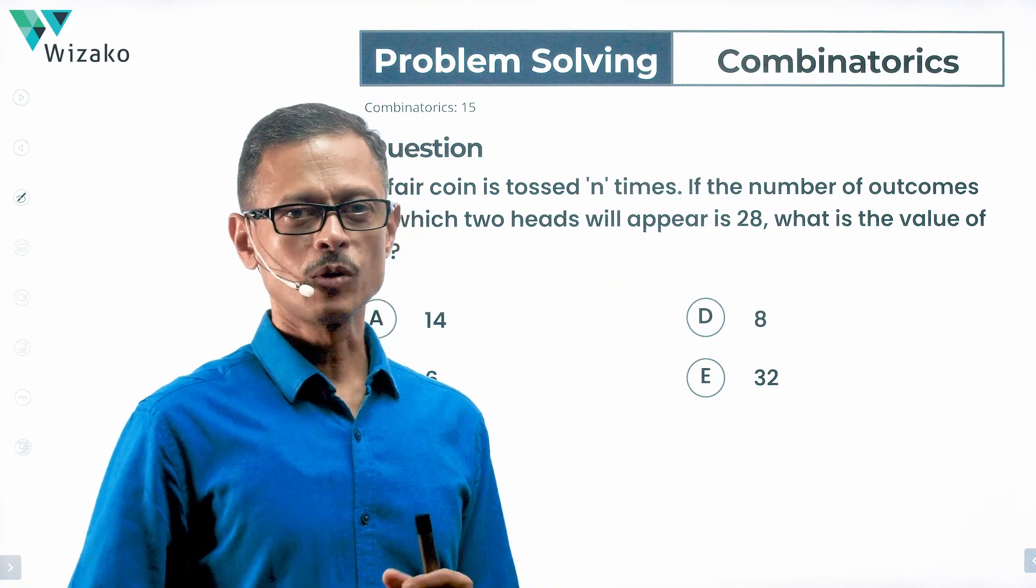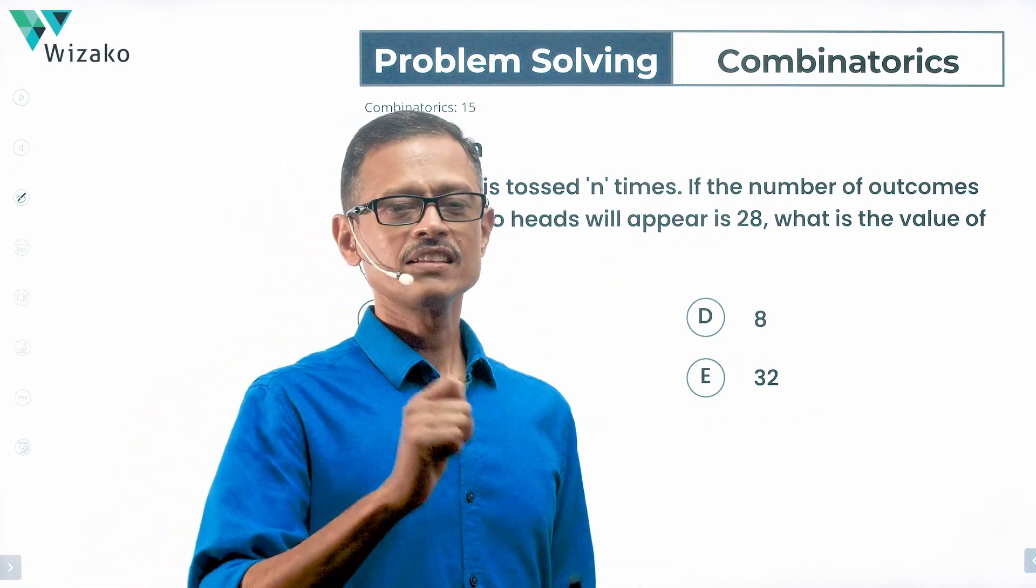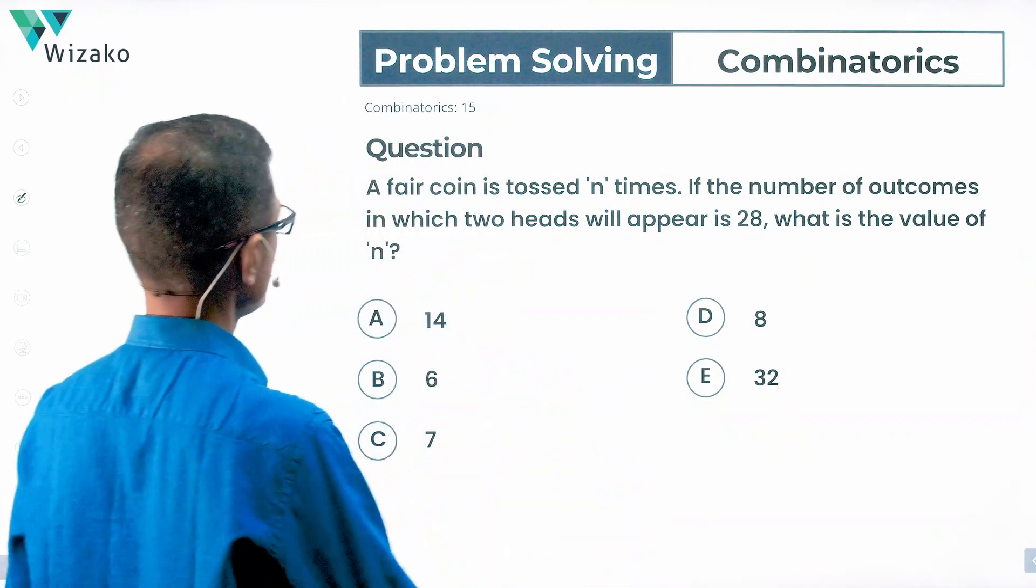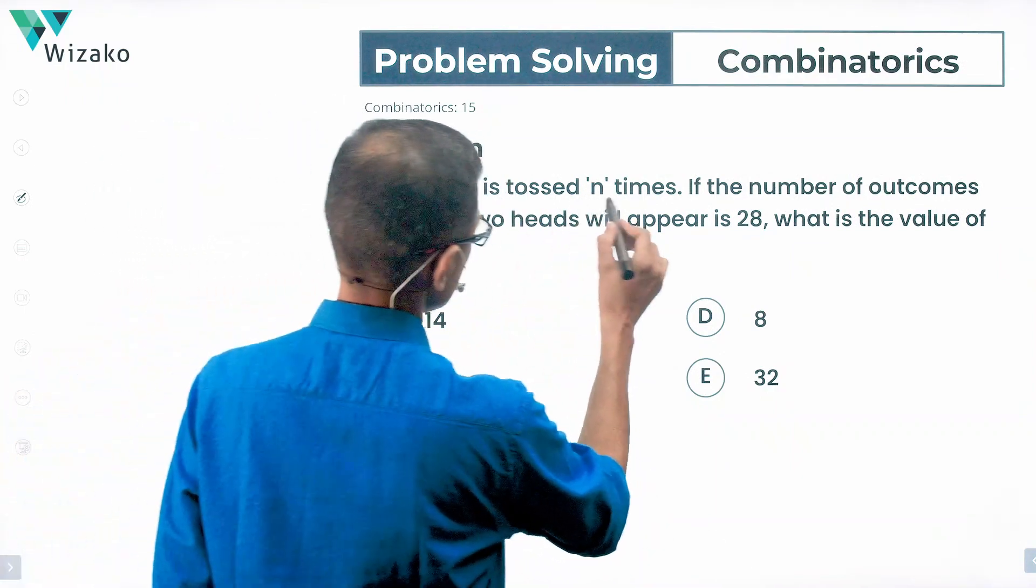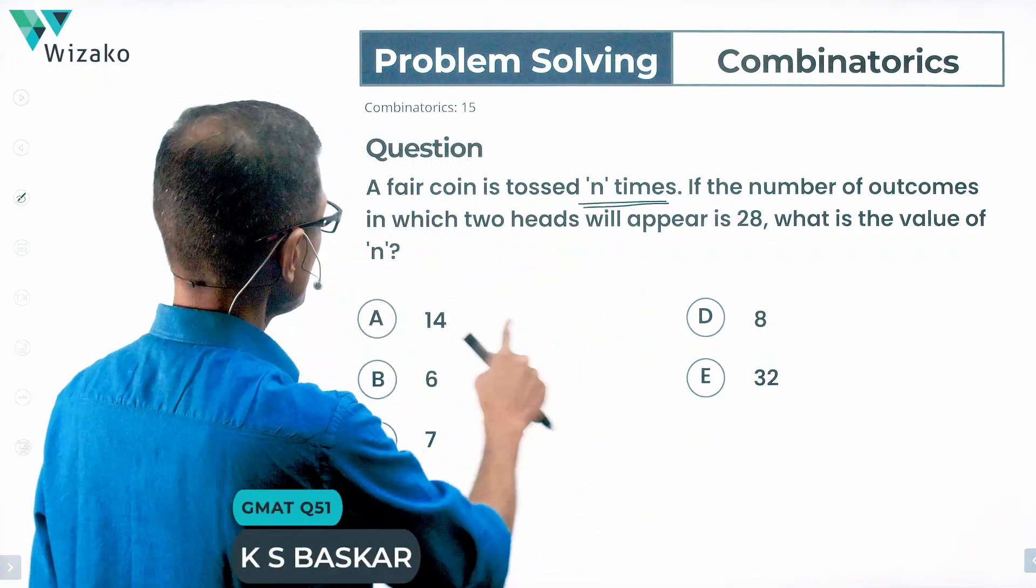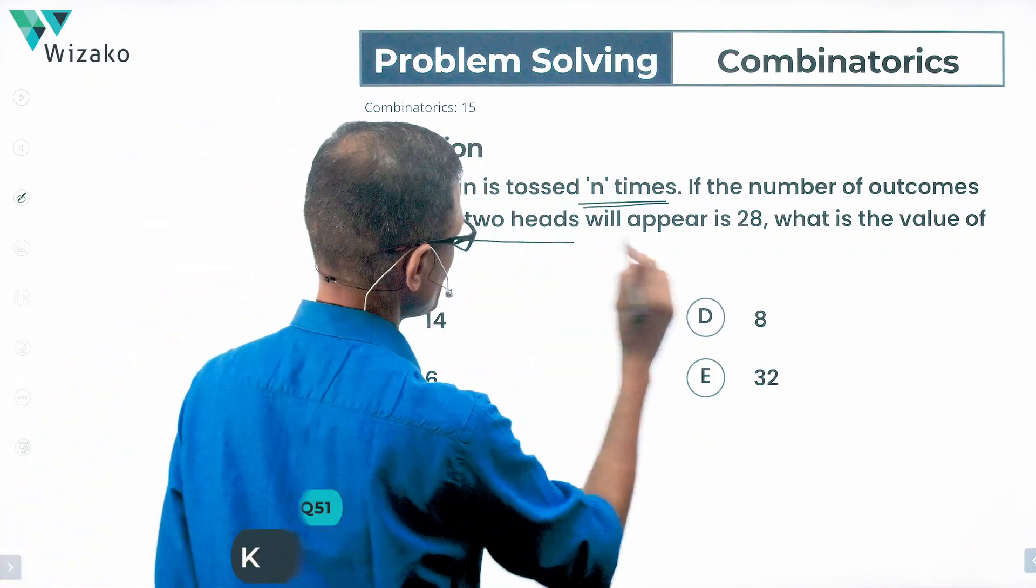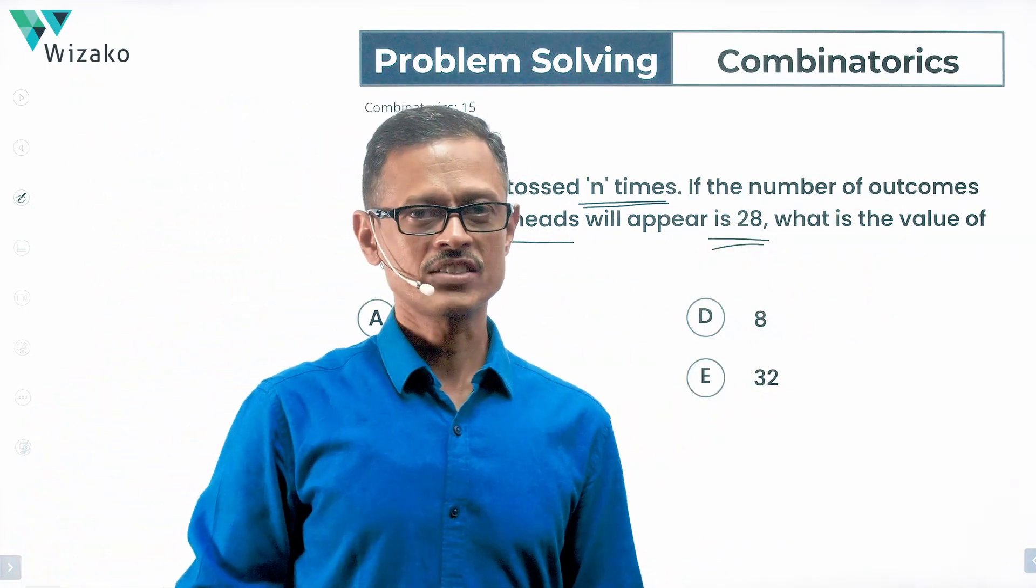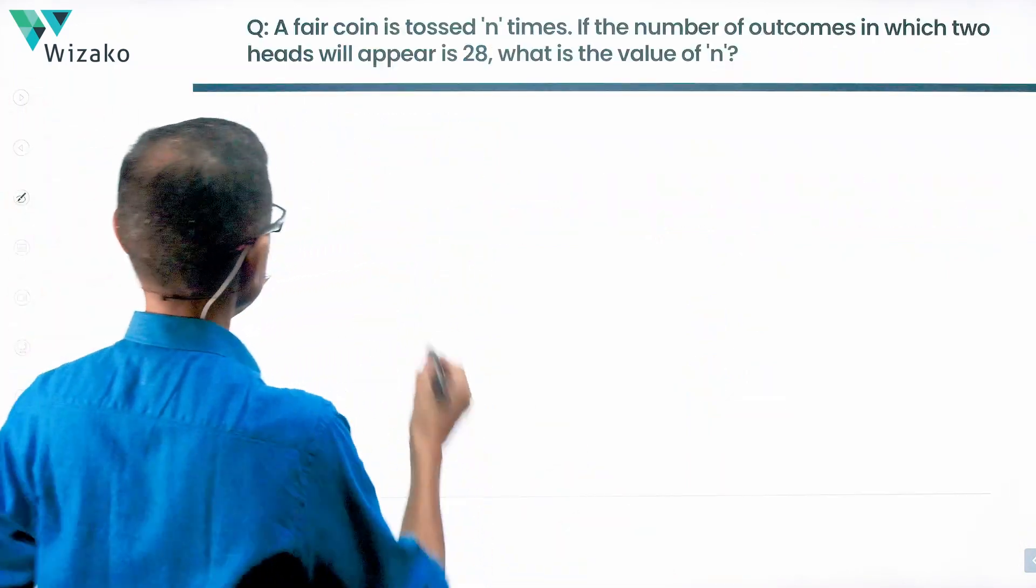This is an easy to medium difficulty problem-solving question testing concepts of coin tossing. It's a permutation combination question. A fair coin is tossed n times. The number of outcomes in which two heads will appear is 28. What is the value of n? How many times did we toss it is what the question is asking.